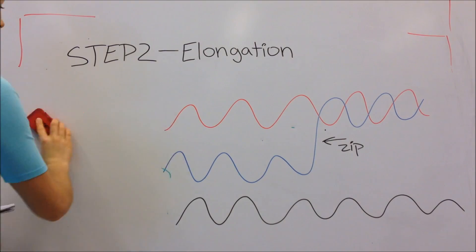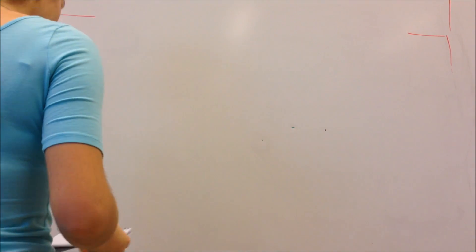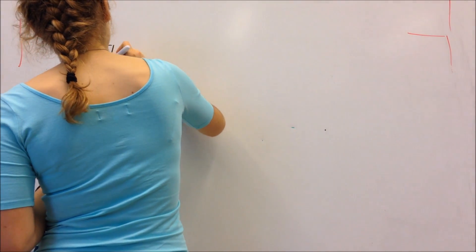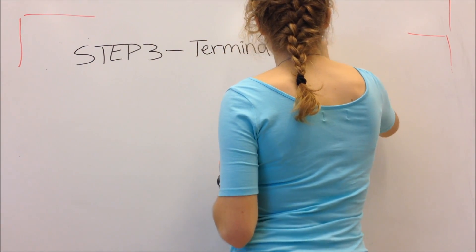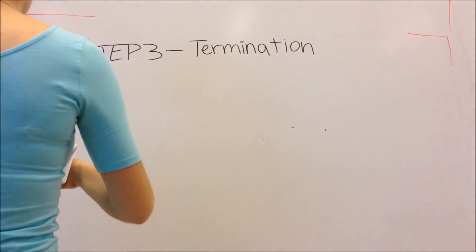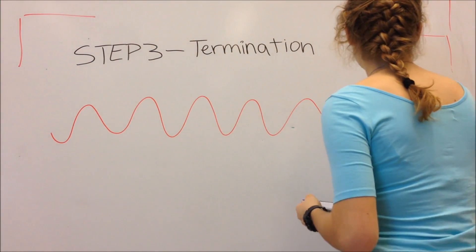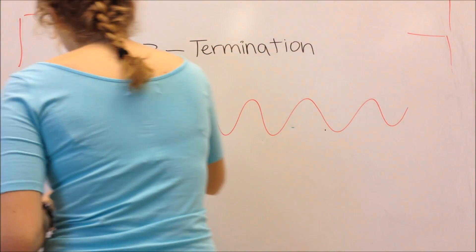The last step of DNA transcription is termination. At the end of the binding area of the RNA polymerase is something called the terminator. It is the exact opposite of a promoter. It tells RNA to stop copying.